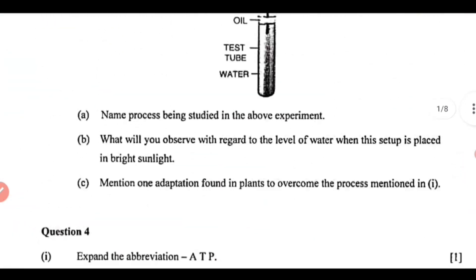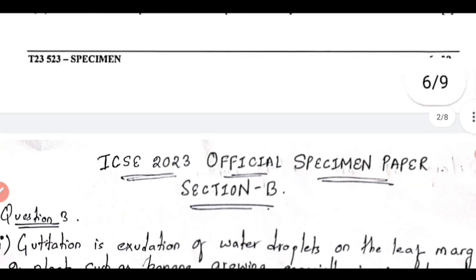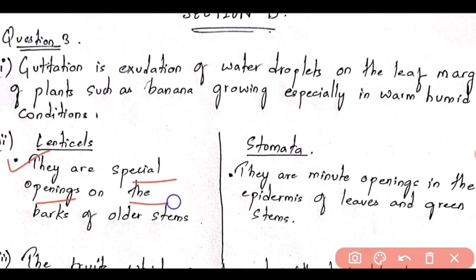Moving ahead to question number 2: give one difference between lenticels and stomata. You have to tell one difference. Lenticels are special openings on the barks of older stems, whereas stomata are minute openings in the epidermis of the leaves and green stems.